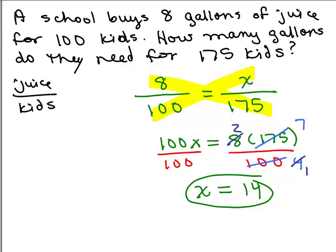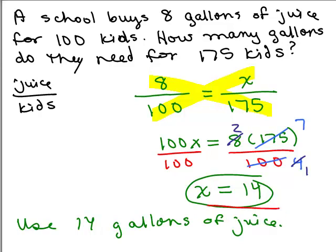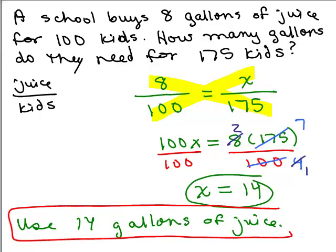So how many gallons of juice do they need? Use 14 gallons of juice. Does that seem reasonable? Well, you're not doubling the number of kids. You're going from 100 kids to 175 kids. If you doubled the recipe of how much juice you'd need, you need 16 gallons, and this is a little bit under, so that answer seems reasonable. Always look back and see that your answer seems reasonable.